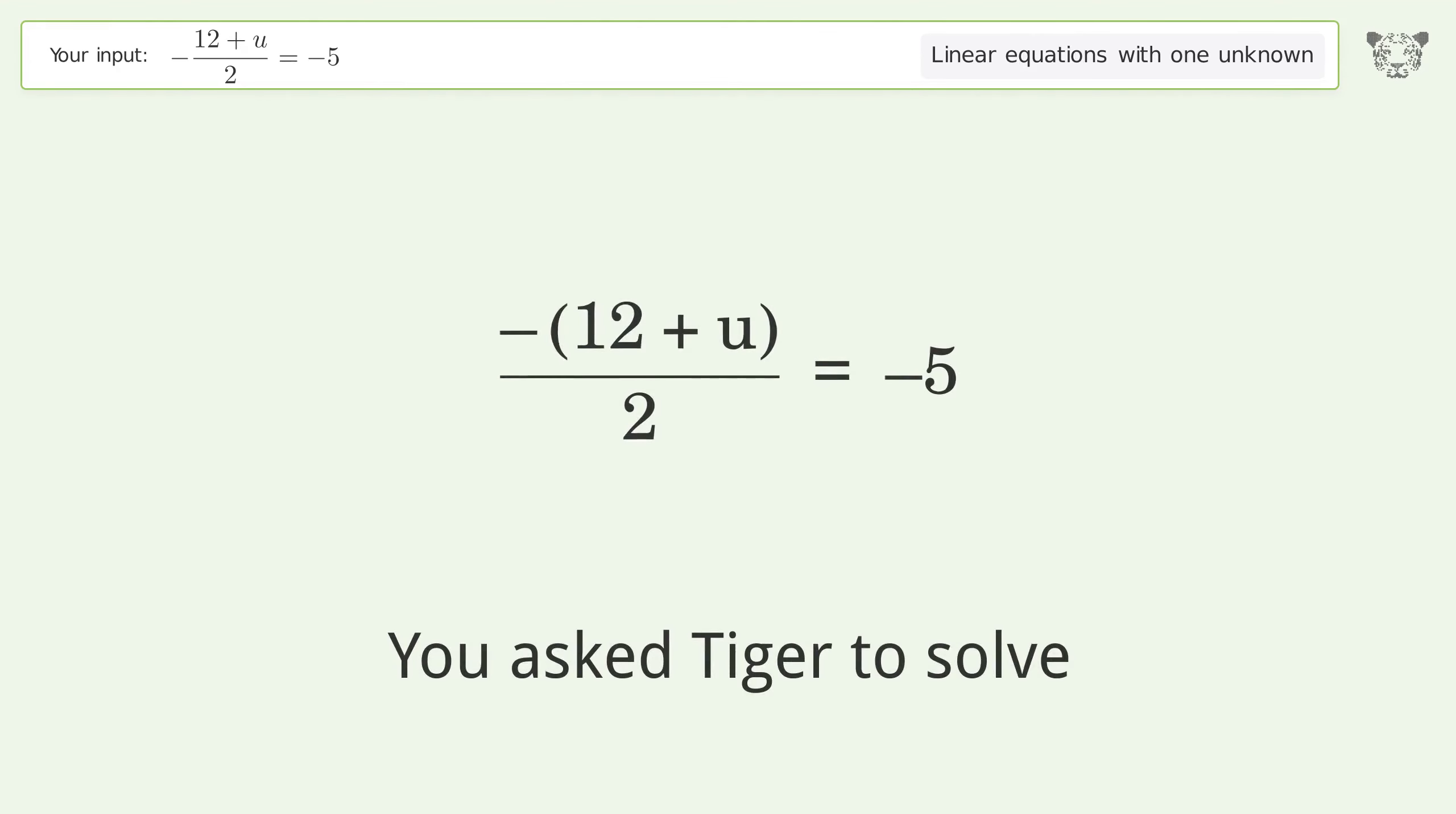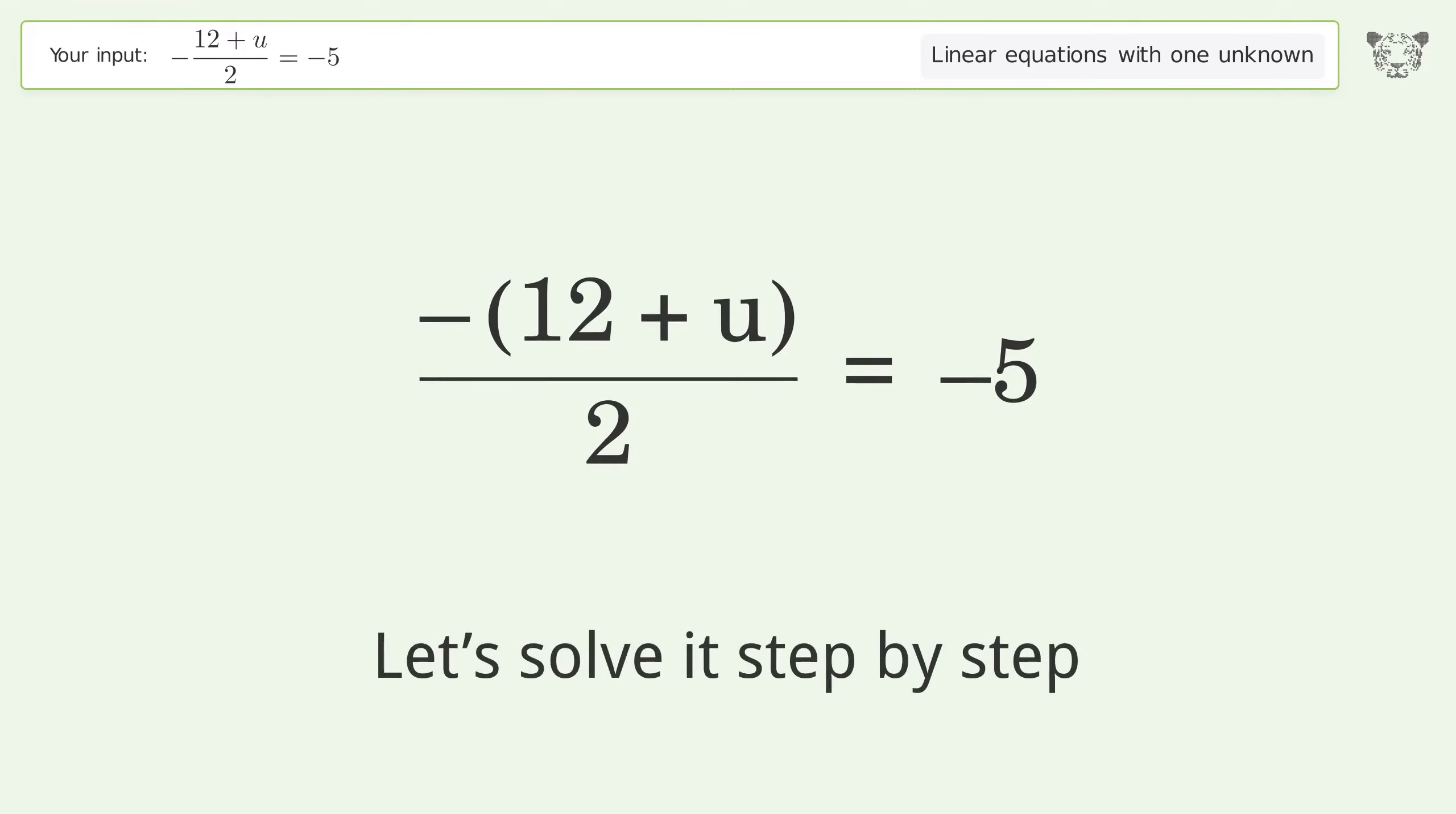You asked Tiger to solve this. It deals with linear equations with one unknown. The final result is u equals negative 2. Let's solve it step by step. Simplify the expression.